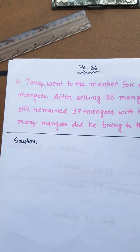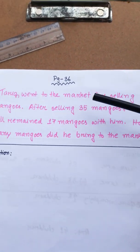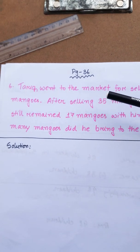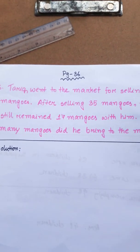Now the next method is problem 6. Tariq went to the market for selling mangoes. After selling 35 mangoes, there still remain 17 mangoes with him. How many mangoes did he bring to the market?